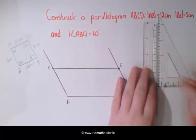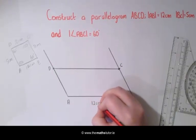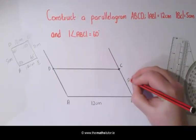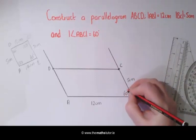And here we have our parallelogram where AB is 12cm, BC is 5cm and the angle ABC is 60 degrees.